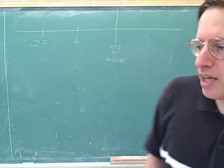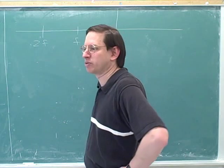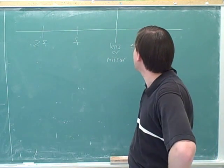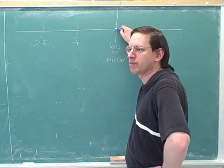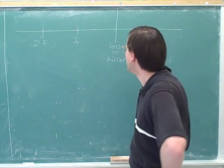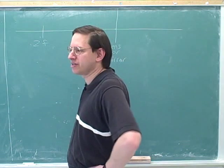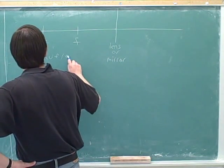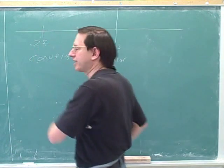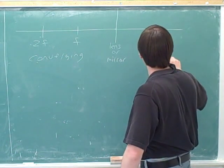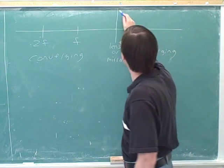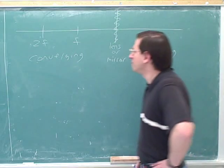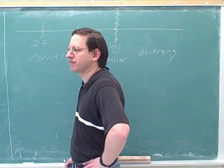We went over this key diagram last time, so let's review it — we'll keep using it today. We have either a lens or a mirror here. One side is the converging side and one side is the diverging side. If we have a converging device, we use this part of the diagram; if we have a diverging device, we use this part.